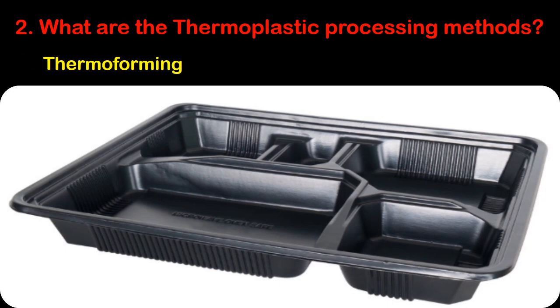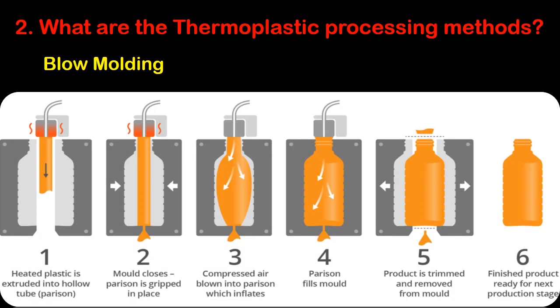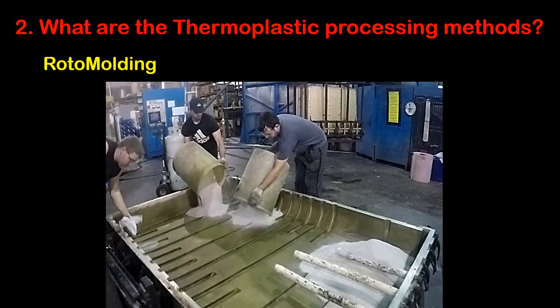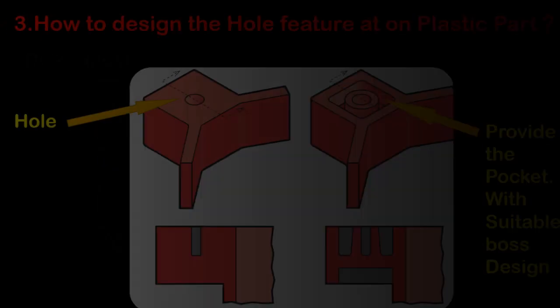Third is thermoforming, which creates a shape from a thermoplastic sheet that has been heated to its softening point to form the shape of the plastic component. Fourth is blow molding, which efficiently produces hollow items such as bottles. Fifth is rotomolding, where a measured quantity of thermoplastic resin, usually powdered, is placed inside a mold that is externally heated and rotated so the plastic component forms.